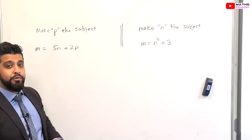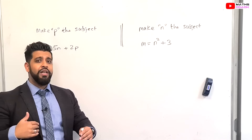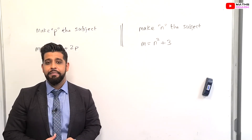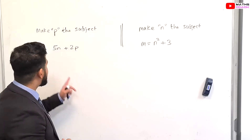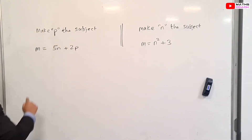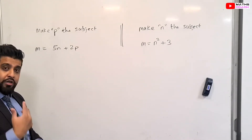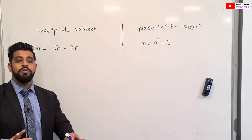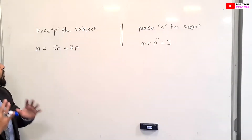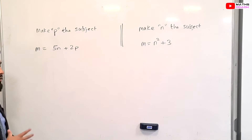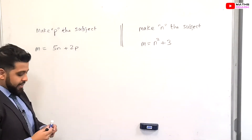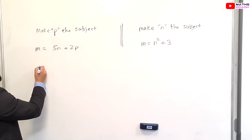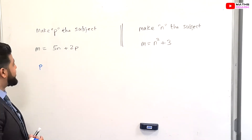Let's look at the next example. We want to make P the subject and we have M = 5N + 2P. I'll keep showing both methods for a while. Because we're making P the subject, we start with P and follow BODMAS rules — so multiply by 2 comes first, before adding 5N. So: P → multiply by 2 → plus 5N → gives M.